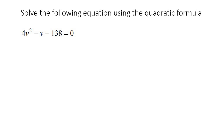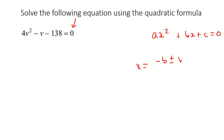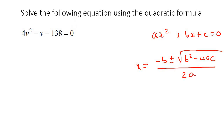Here's our next one. You always want to make sure that it's written in the form ax squared plus bx plus c equals to 0 — you always want the 0 on one side. So here we are good. Remember that this is a, this is b, and this is c. Well, b is the number in front, and then that's c.